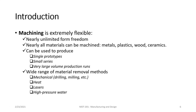Nearly all materials can be machined, including plastics, wood, and ceramics, so it's very adaptable to different materials. It can be used to produce single prototypes — onesies and twosies — small series production, or very large scale production runs. We have a wide range of material removal methods: mechanical methods such as drilling, milling, face milling, turning operations, boring, and reaming, and also heat, lasers, and high pressure water.